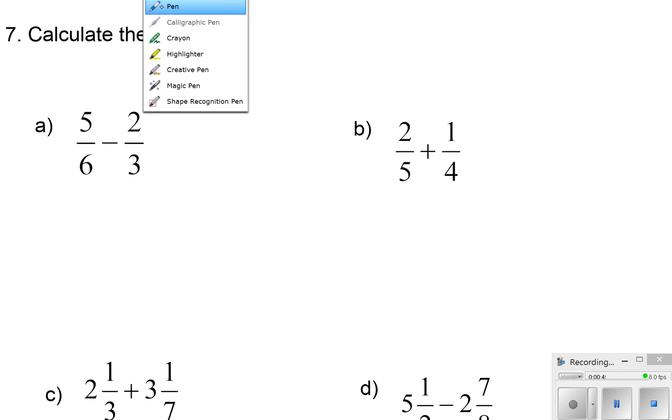So that would mean that the first number, 5 over 6, would not change. Now one thing that you do have to remember is whatever you do to the bottom number, the denominator, you have to do to the top number, the numerator. So to get 6, I need to do 3 times 2. So that means I need to do the same to the top, and the top will become 4. This work here is optional. You don't have to show that work. You might just do that in your head, and that's okay.